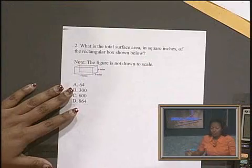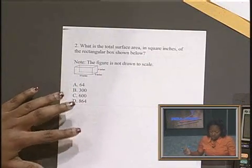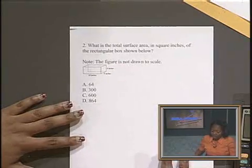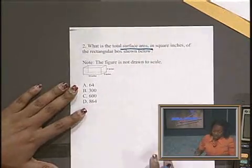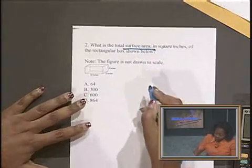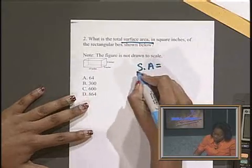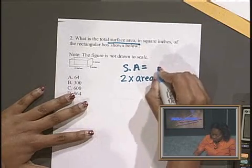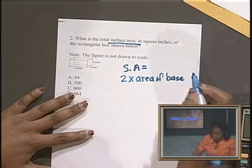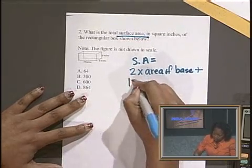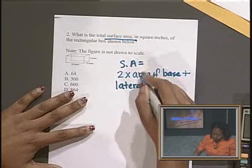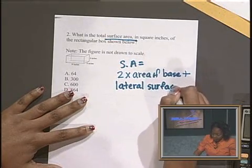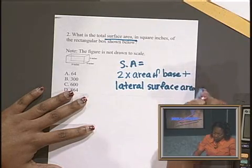Now I'm going to move on to my second question of the day. And it's a selected response. What is the total surface area in square inches of the rectangular box shown below? And then they give us a note. The figure is not drawing a scale. So first, what is surface area? Surface area, I'm going to abbreviate, equals 2 times area of base plus the lateral surface area.